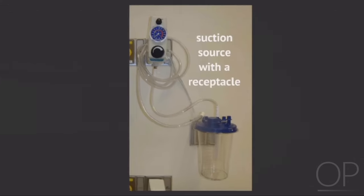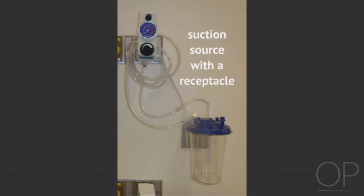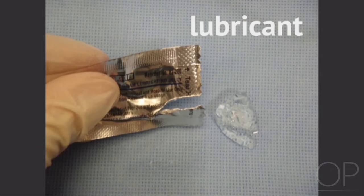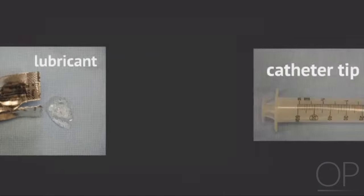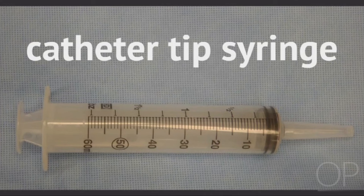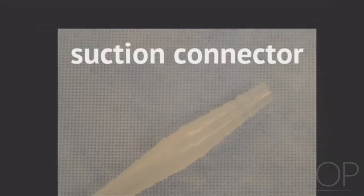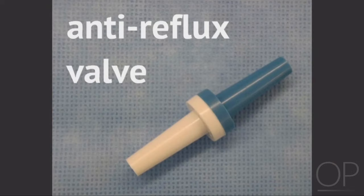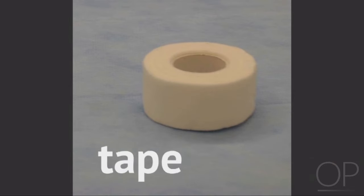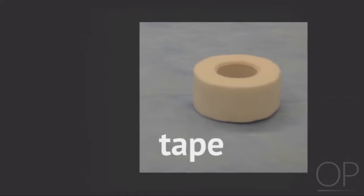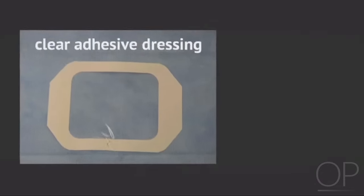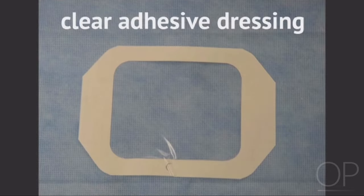You will also need a suction source with a receptacle, lubricant, catheter tip syringe, suction connector, anti-reflux valve, tape, gastric pH paper, and clear adhesive dressing.